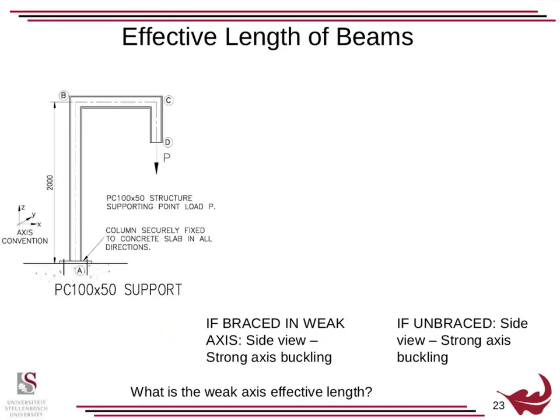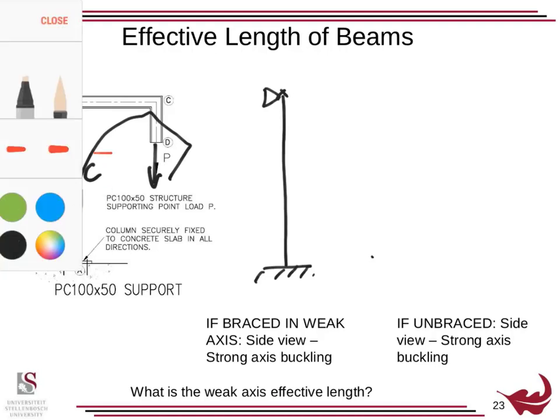Let's have another look at the effective length of beams. Here is our section once again. Just start thinking what would happen to this if braced in weak axis side view. Here's our section; it's braced. As this is loaded, we'd first have to say what goes into compression and what's in tension.